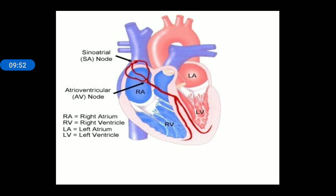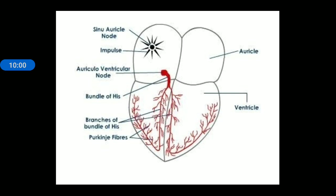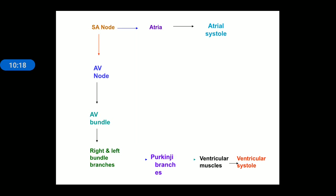This is the same diagram from another angle. You can see the SA node, AV node, and the message being transferred to the ventricle area with the help of the Bundle of His and Purkinje fibers. The SA node generates the wave of contraction — called an impulse — the AV node receives it, and it travels through the Bundle of His and Purkinje fibers.